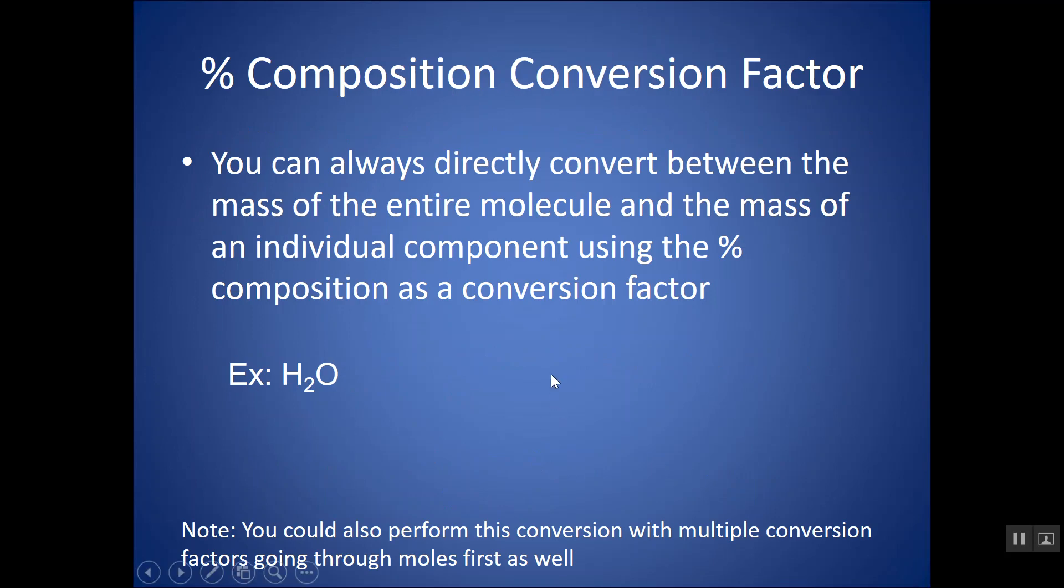You can always use percent composition as a conversion factor to convert between the mass of the entire molecule and the mass of an individual component. So, for example, H2O is 18 grams per mole is my molar mass. If I kind of think of what that fraction is in mass percent, mass of part over mass of whole. So, I could say if I was doing it for percent hydrogen, it would be two grams of hydrogen for every 18 grams of H2O. And if I look at this, if I look at these units, if I multiplied by this fraction, it would let me go between units of grams of H2O and grams of hydrogen. So, I can kind of bypass converting grams into moles and then moles of water into moles of hydrogen. I can go directly between grams of the whole thing, grams of H2O, and grams of hydrogen by using this percent composition as a conversion factor.